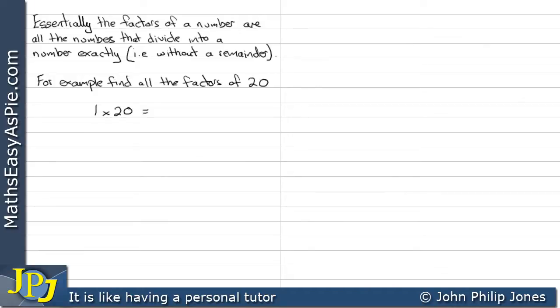We start off at 1, we see if we can multiply that by something to give us 20, and it's obviously 20. Then we go to 2, we can see we can find 10, which gives us 20.